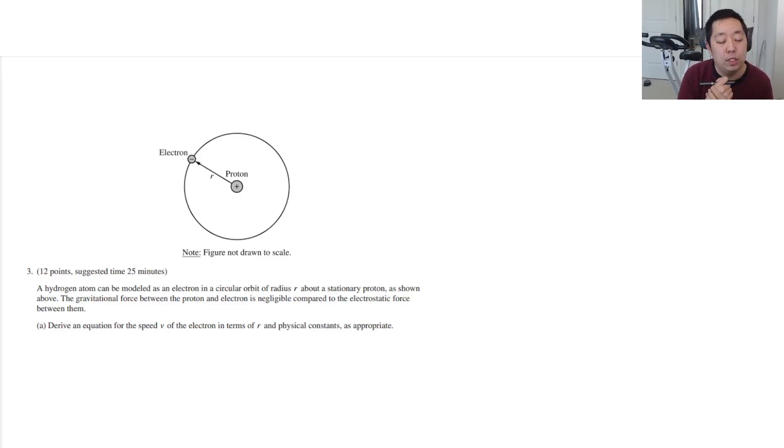Hydrogen atom can be modeled as an electron in a circular orbit of radius r, about a stationary proton. The gravitational force between the proton and electron is negligible compared to the electrostatic force between them. So don't need to worry about gravity, just the electrostatic force. Derive an equation for the speed of the electron in terms of r and physical constants.